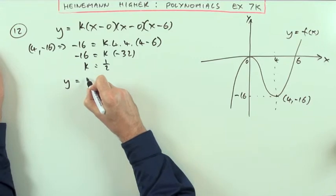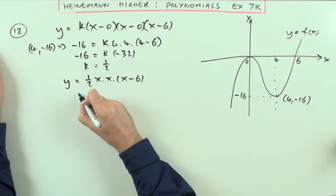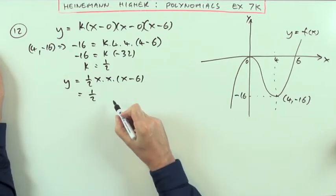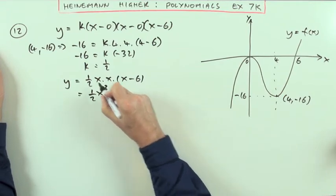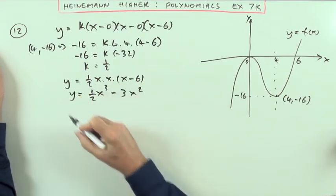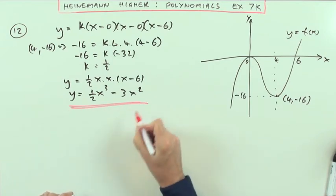So the function is y equals a half of x times x times x minus 6. So I've got a half x cubed minus a half of 6 is 3, x squared. And that's about it. Done.